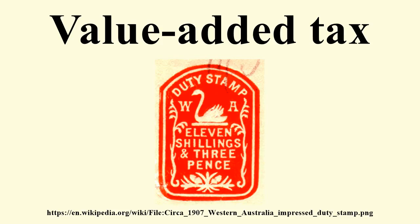Implementation: The standard way to implement a value-added tax involves assuming a business owes some fraction on the price of the product minus all taxes previously paid on the good. By the method of collection, VAT can be accounts-based or invoice-based. Under the invoice method of collection, each seller charges VAT rate on his output and passes the buyer a special invoice that indicates the amount of tax charged. Buyers who are subject to VAT on their own sales consider the tax on the purchase invoices as input tax and can deduct the sum from their own VAT liability.